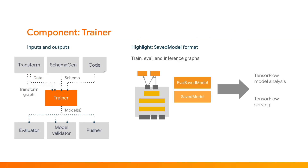Now we're finally ready to train our model — the part of the process that you often think about when you think about machine learning. Trainer takes in the Transform graph and data from Transform, and the schema from SchemaGen, and trains a model using your modeling code. This is normal model training, but when training is complete, Trainer will save two different saved models: one is a normal saved model that will be deployed to production, and the other is an eval saved model that will be used for analyzing the performance of your model.